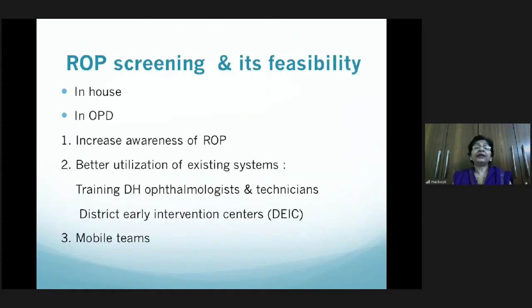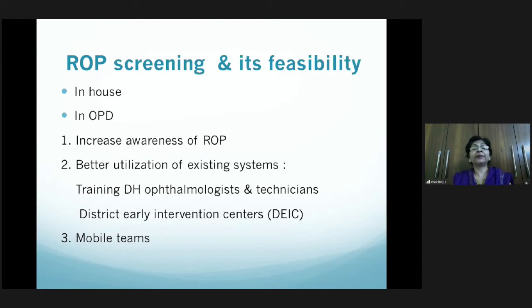ROP screening should ideally be in-house — wherever babies are being cared for, the first screening must be done there, in the comfort of an SNCU. Later follow-up screenings can be done in an OPD. Increasing awareness of ROP and better utilization of existing systems will help in a big way in screening and treating babies.